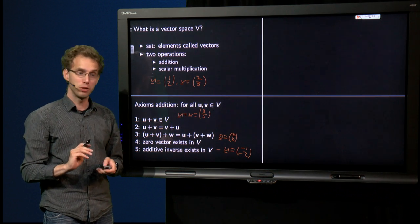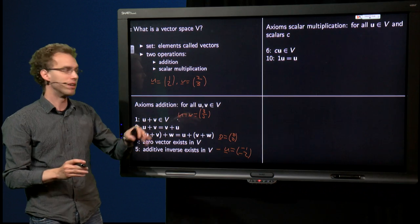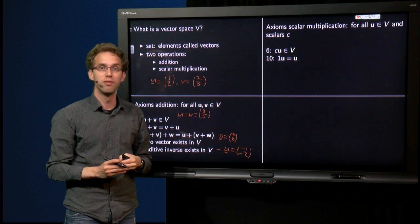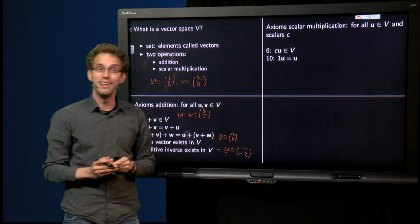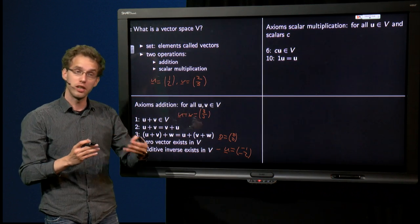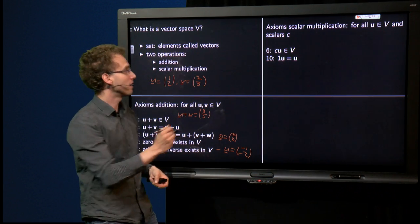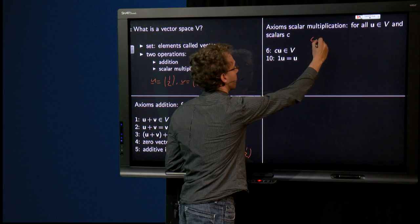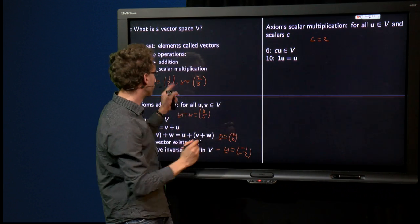On to the scalar multiplication. We need that it is closed under scalar multiplication. So a scalar multiple of a vector has to be a vector again. If we take for example c equals 2, then c times u equals (2, 4).